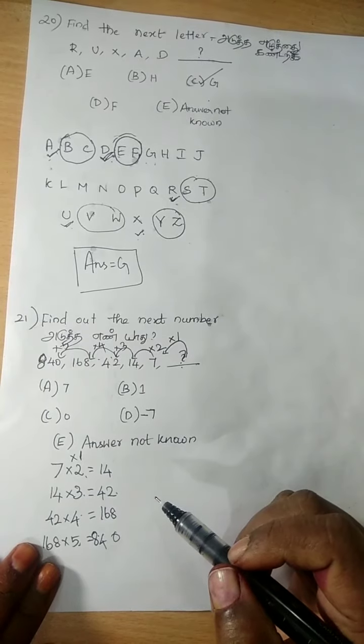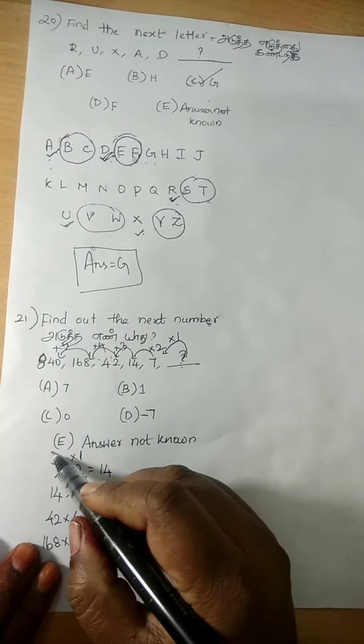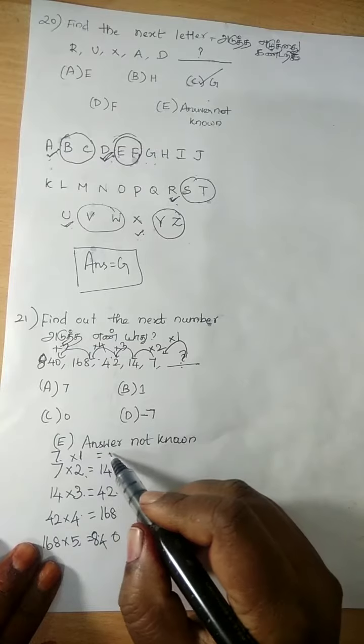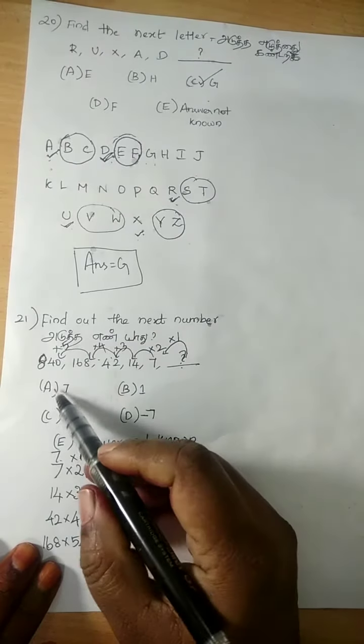Which number multiplied by 1 will give us 7? Again, 7. 7 multiplied by 1, we will get 7. So the answer is 7.